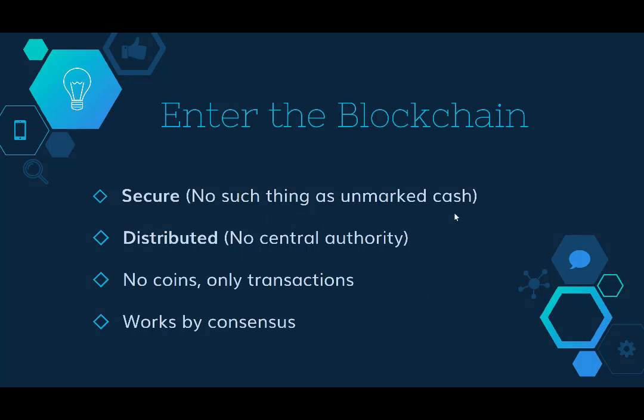So what does the blockchain do? There are basically four points you see all over the internet: it's secure — there is no such thing as unmarked cash; it's distributed — there is no central authority and anybody can work on it; there are no coins, only transactions; and it works by consensus.